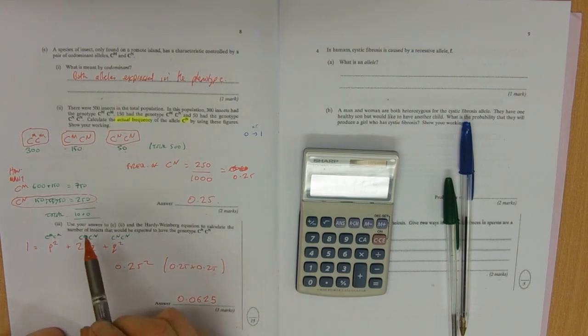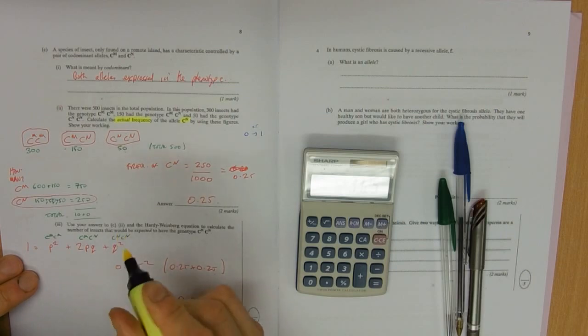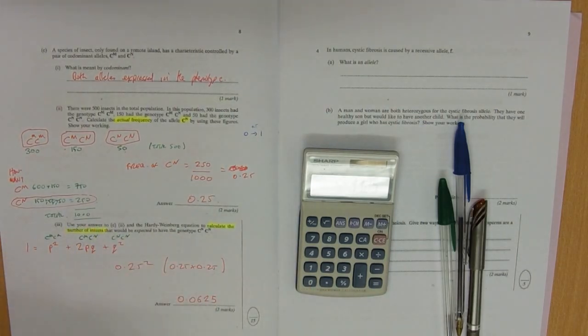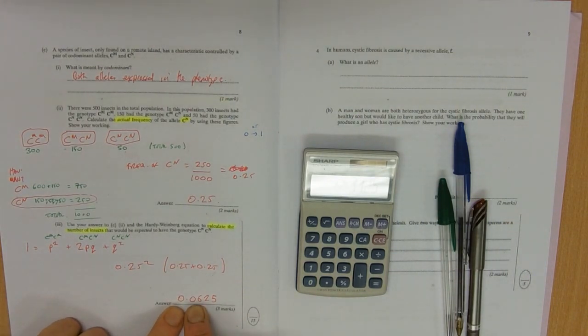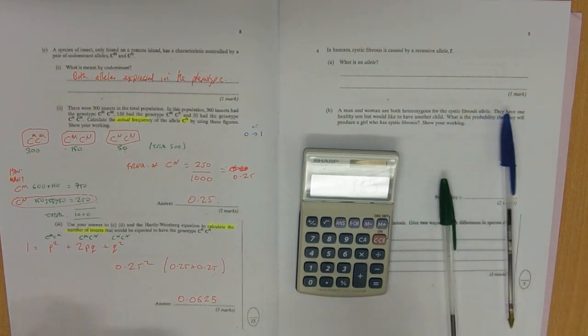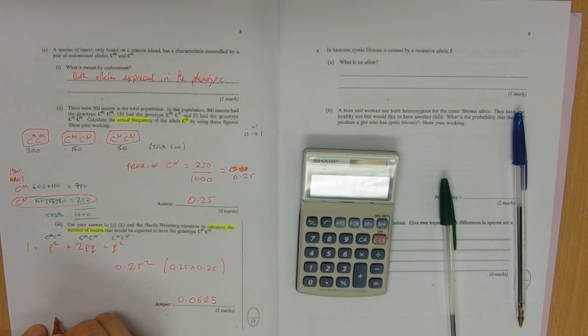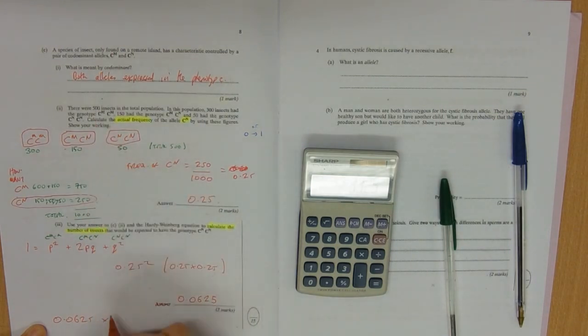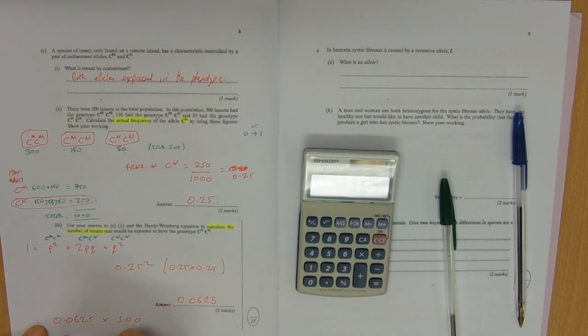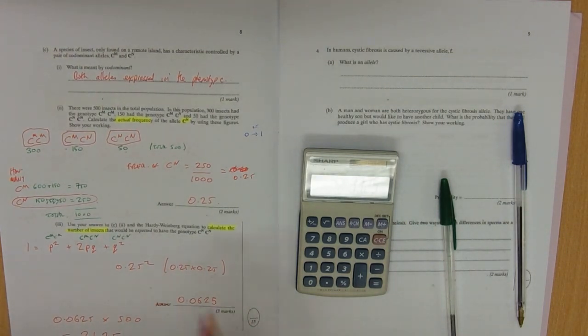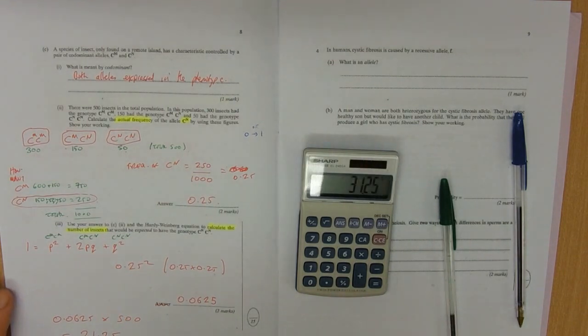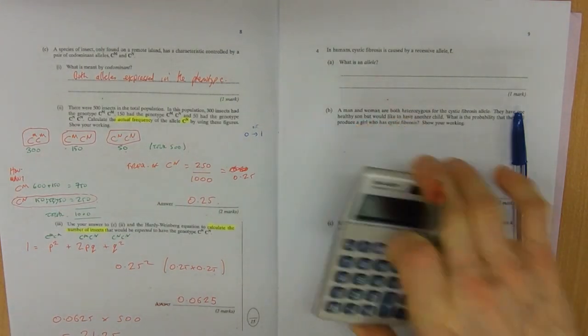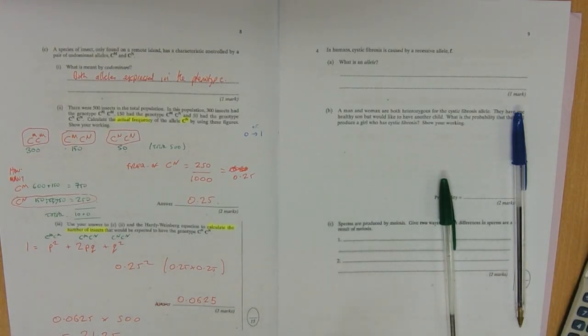But on checking it says calculate the number of insects. So that is a proportion of the population, but what's the population? 0.0625 of our population which is 500 equals 31.25. And that is our answer for the number of insects. You could possibly round that to the nearest insect, unless you like cutting them up like me. 15 marks. So a few calculations. Hopefully that didn't bring too much pain into your life.